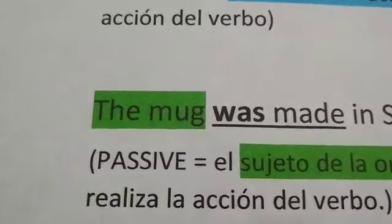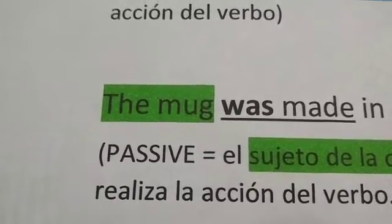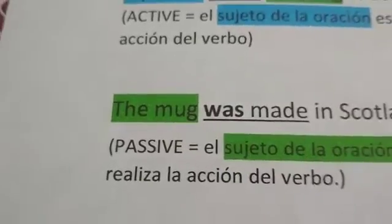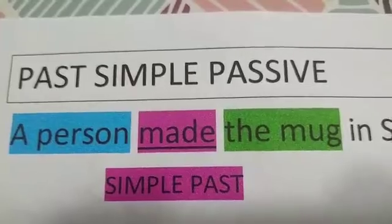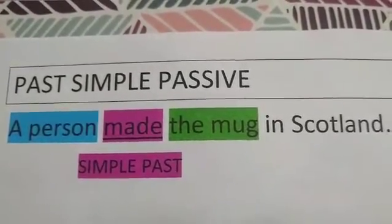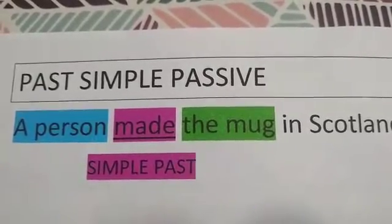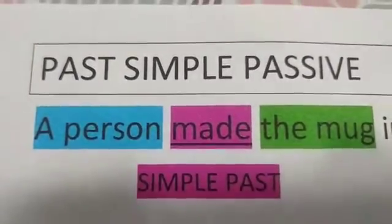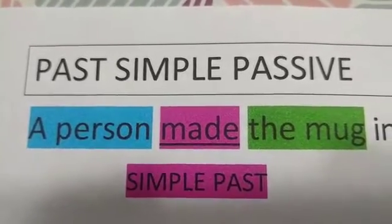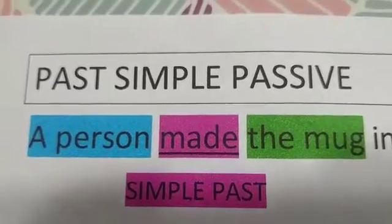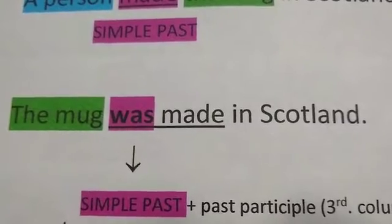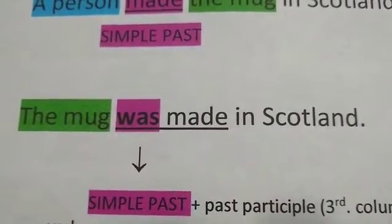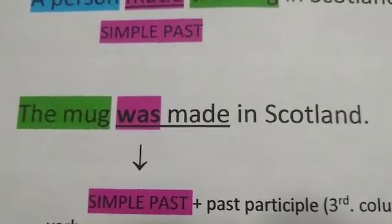The subject, the mug, is passive. A person made the mug in Scotland — this sentence is in simple past; 'made' is simple past. The passive sentence, 'the mug was made in Scotland,' is past simple passive.